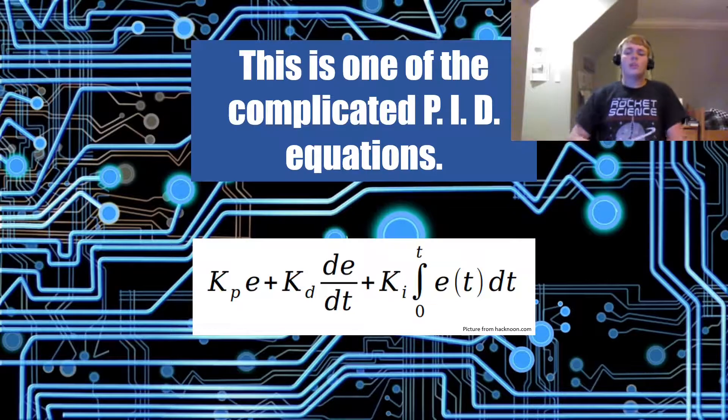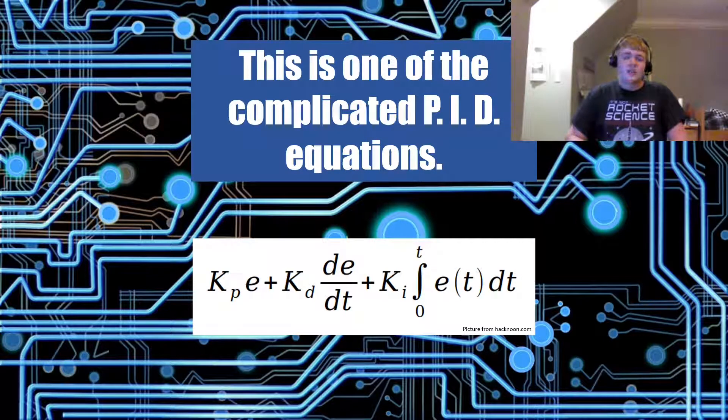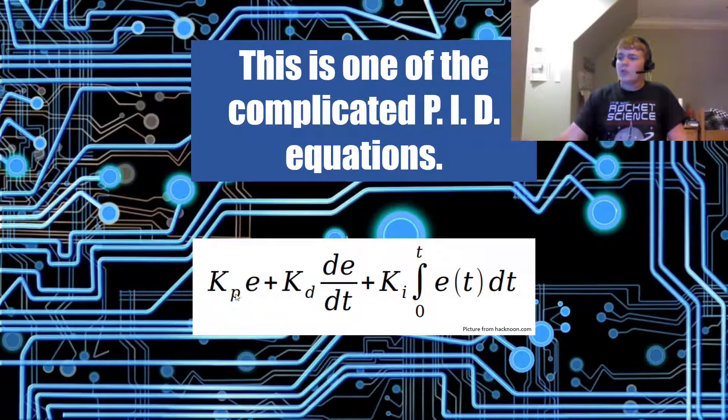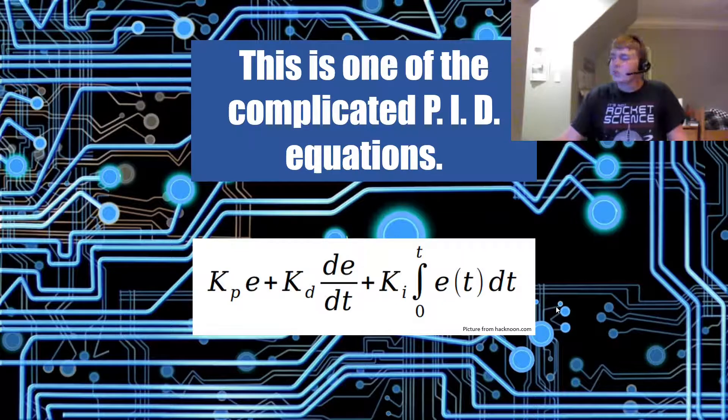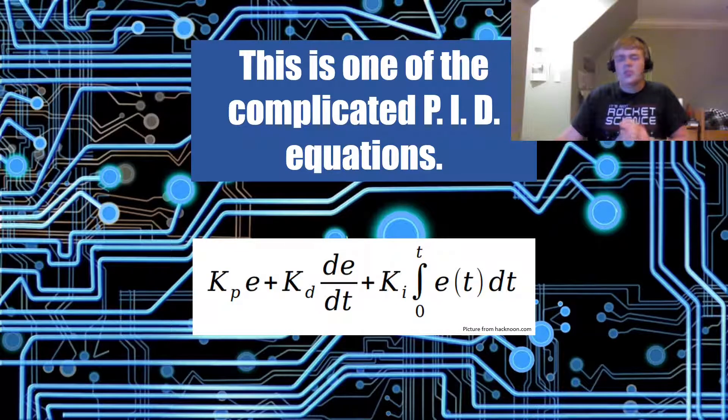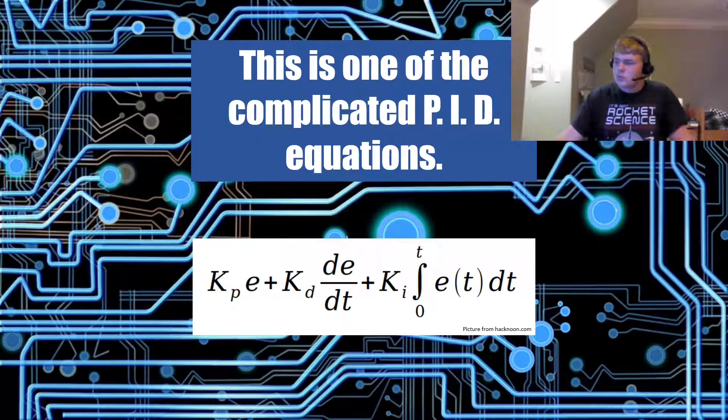So, this is one of the complicated PID equations. As you can see here, we have our P value, our I variable, and our D variable throughout this. And there are many different formulas for this, but this is just one I found quickly, and there are many others.